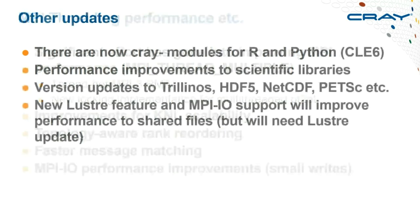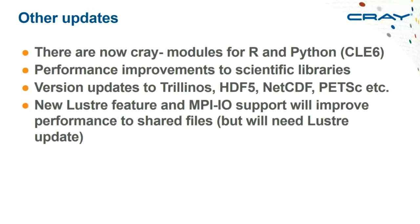Cray modules for R and Python compatible with the rest of the environment are available but only on CLE 6. There are important improvements to scientific libraries and the large packages within them. Looking further ahead, a new Lustre feature will enable better performance for shared file access, currently limited by Lustre locking. This would need a new Lustre installation update, so it's uncertain when it might arrive on Archer, but it's one to watch.